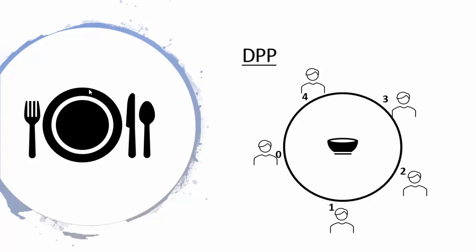While eating they go to this table. In the center of the table there is a bowl of rice. To eat rice they need two chopsticks, and there are five chopsticks placed on the table. Every philosopher picks up the two chopsticks nearest to him. For example, philosopher one will pick up chopstick number one and chopstick number two. Similarly philosopher two will pick up chopstick number two and chopstick number three.